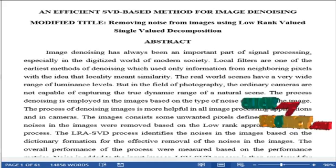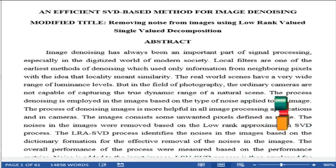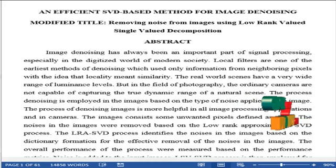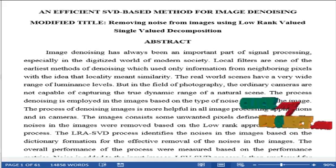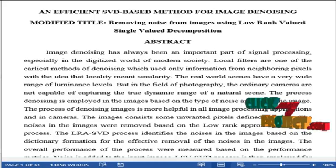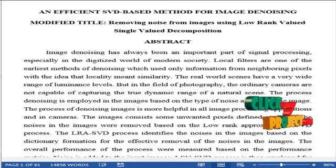Image denoising has been an important part of signal processing, especially in the digitized world of modern society. Local filters are one of the methods for denoising, which use only information from neighboring pixels, with the idea that locality means similarity. The real world has a very wide range of luminance levels.